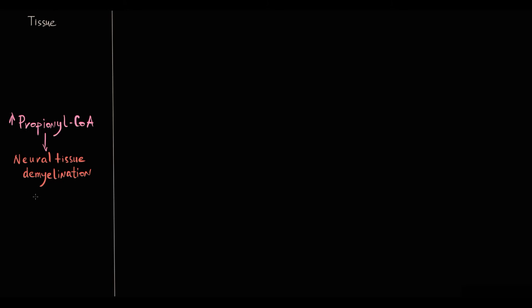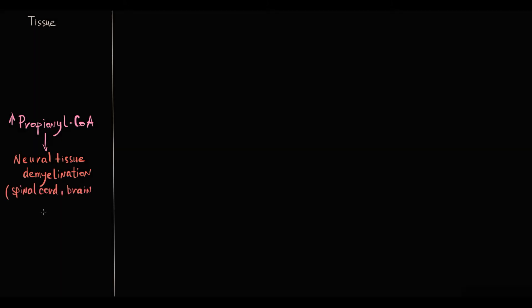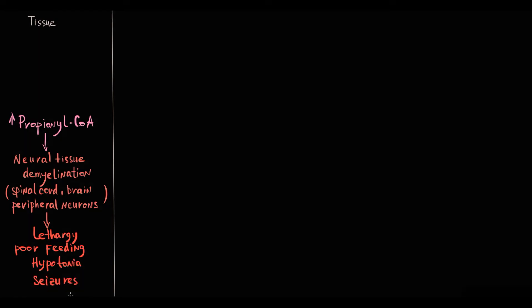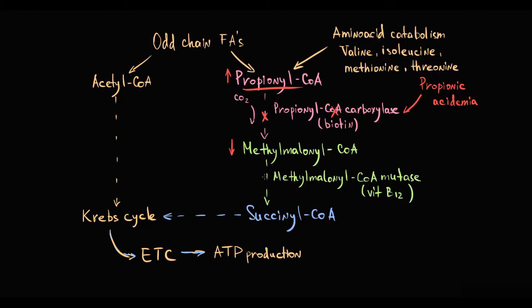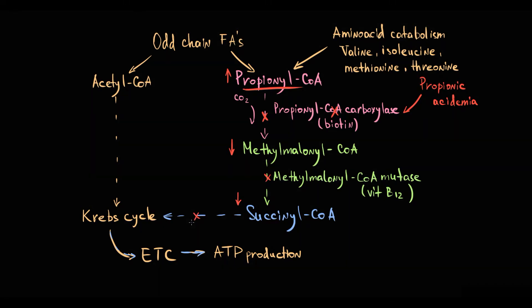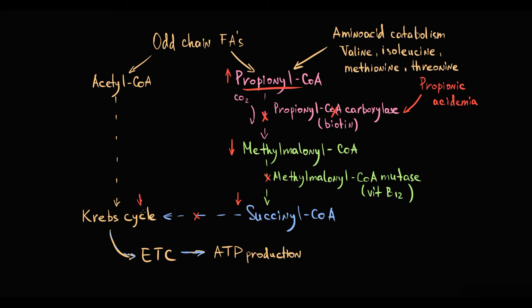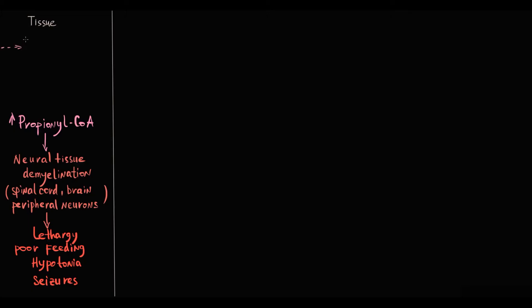Accumulation of propionyl-CoA causes demyelination of the spinal cord, brain, and peripheral neurons, resulting in clinical symptoms such as lethargy, poor feeding, hypotonia, and seizures. Also, without this conversion, succinyl-CoA cannot be formed, so it will not enter the Krebs cycle. Decreasing the Krebs cycle metabolite decreases the rate of the Krebs cycle, thereby decreasing energy production and causing energy deficiency.